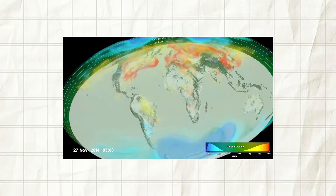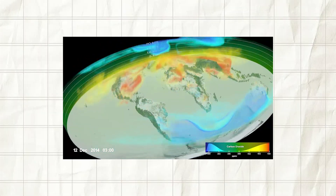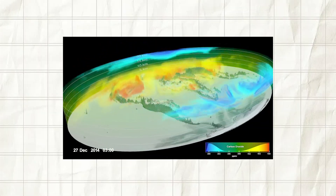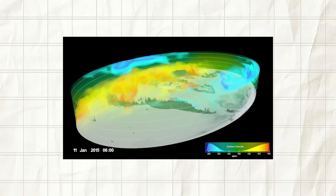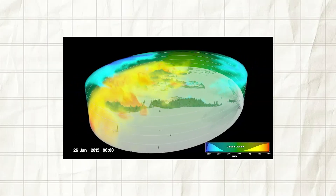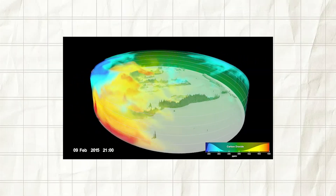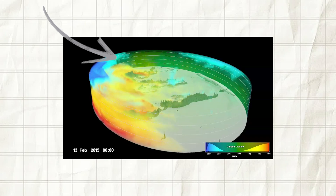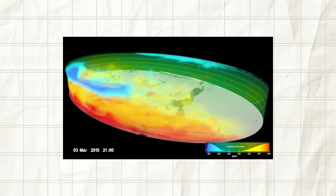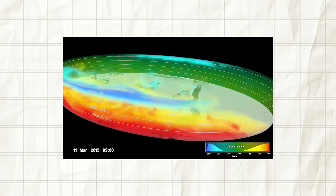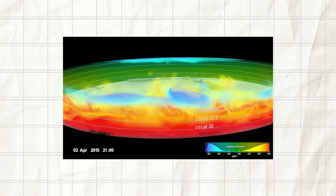We actually had a colleague in Australia write to us about a previous visualization and say they never knew how that air mass got to Australia — but because they saw it in a movie, they understood that the air mass had been lofted by thunderstorms in the mid-latitudes and transported by high winds at a higher altitude.